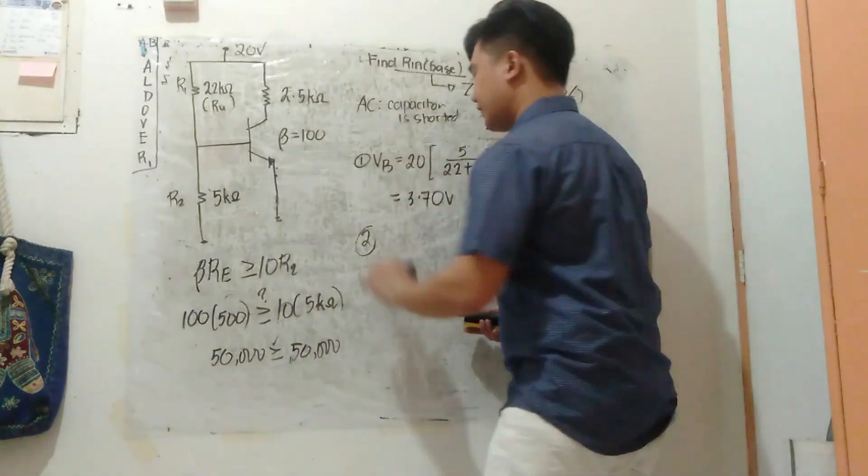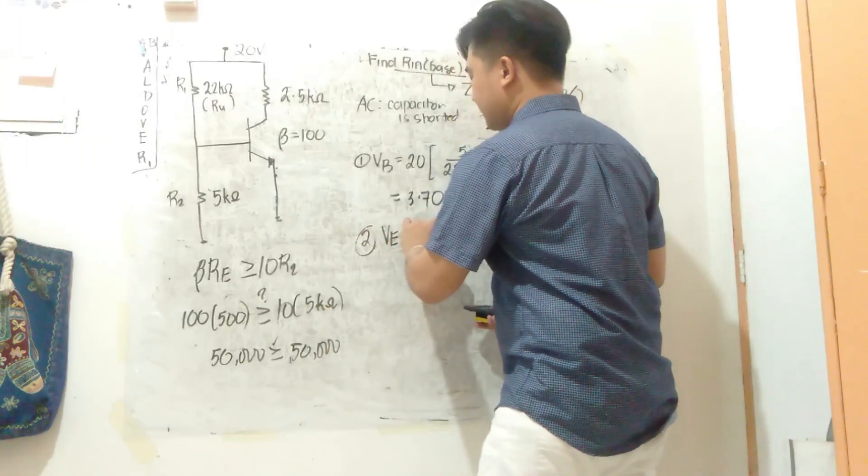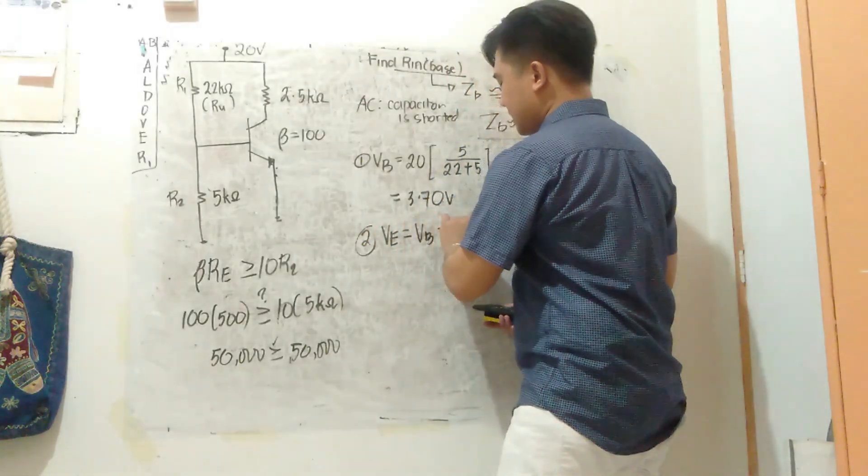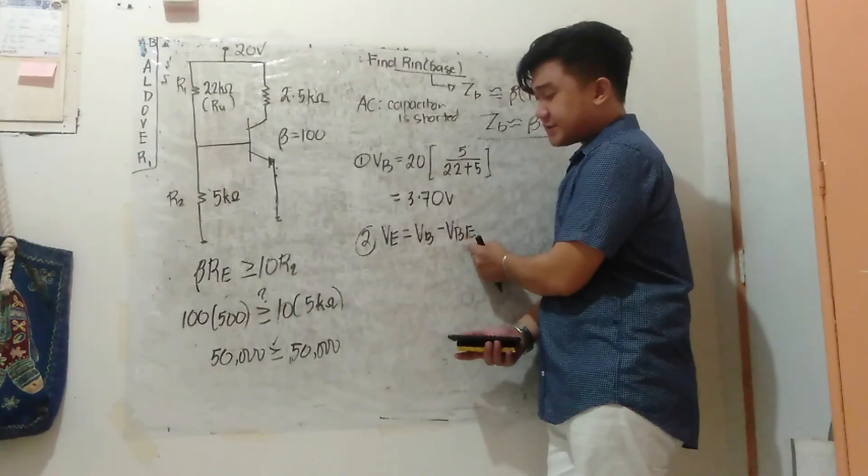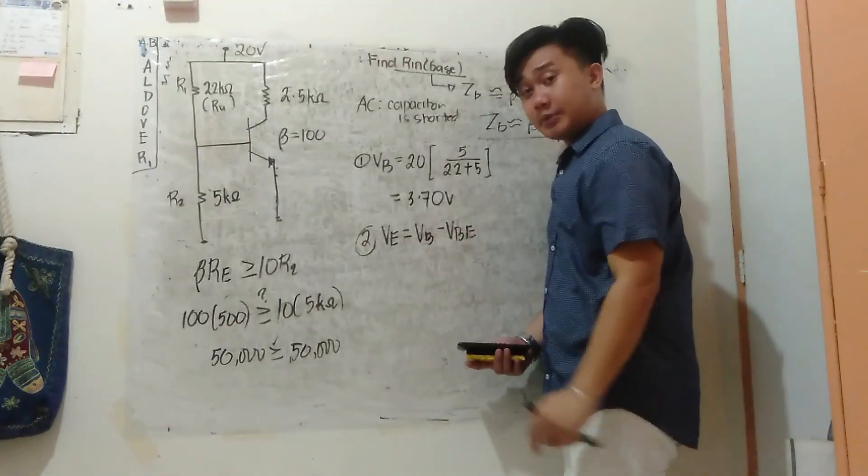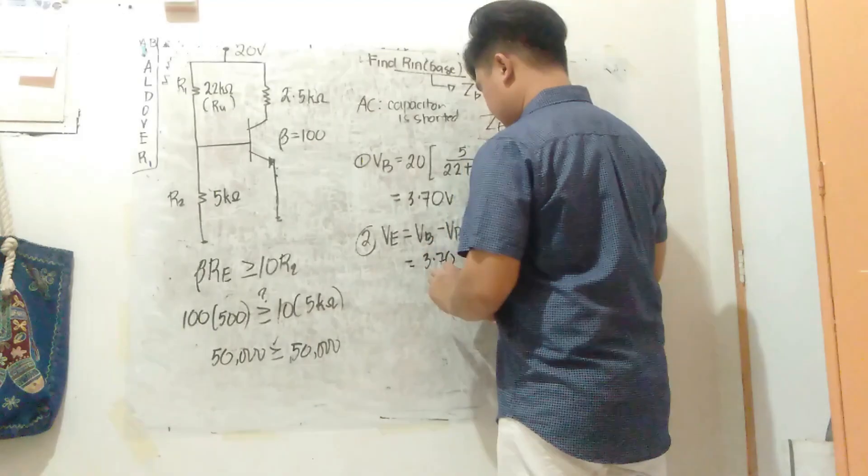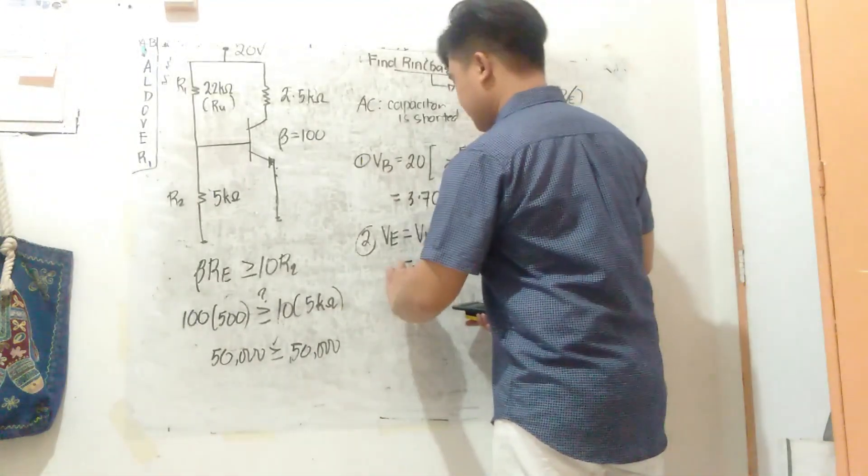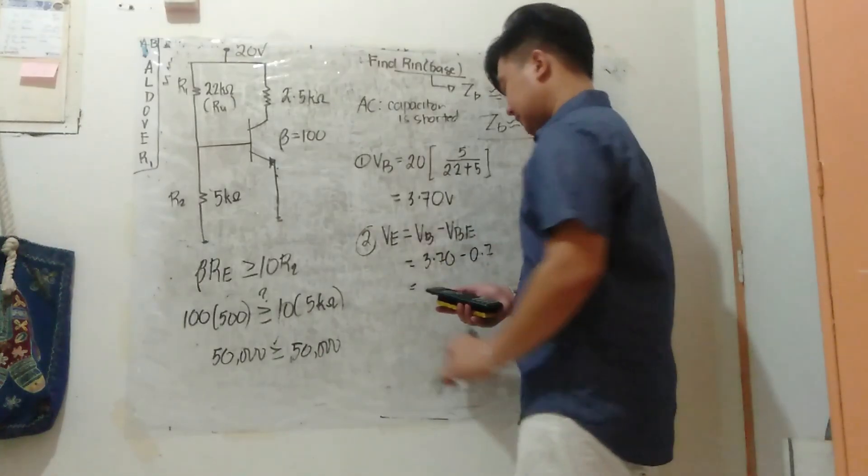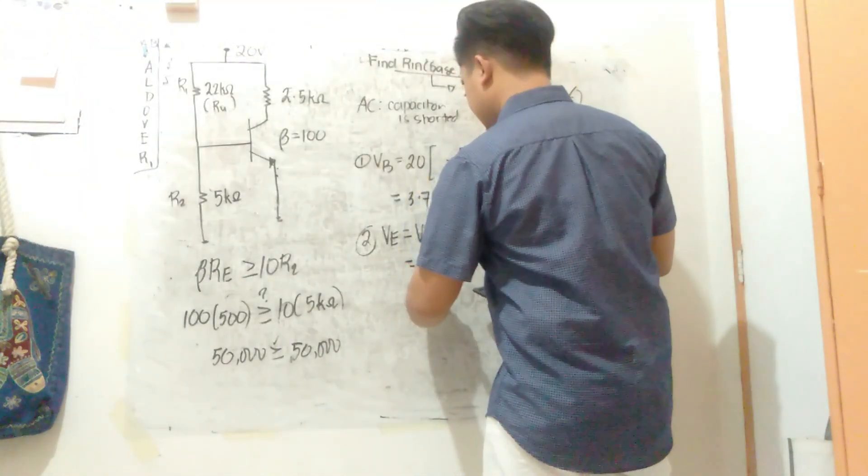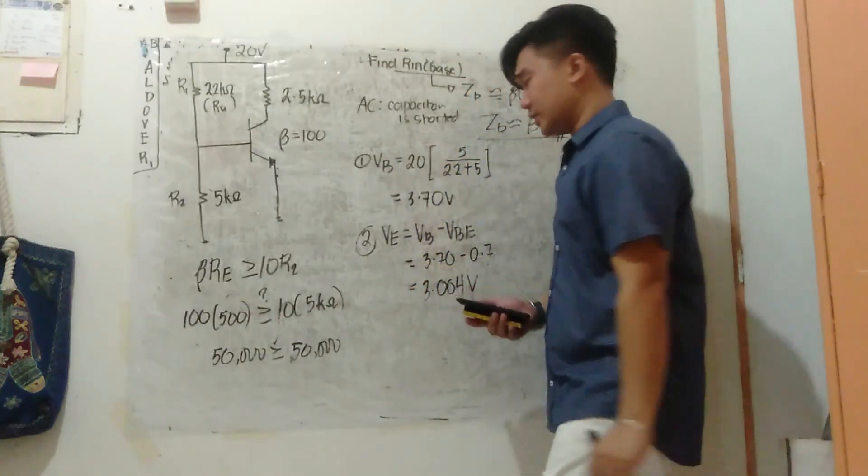Second step, find VE. VE is simply VB minus VBE. You don't need to memorize this because VBE equals VB minus VE, just transpose it. So that's 3.70 minus 0.7. I can see that my VE is 3.0 volts, approximately 3 volts.